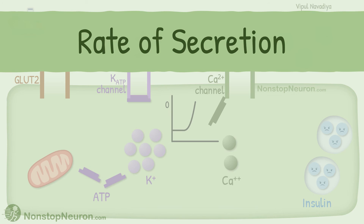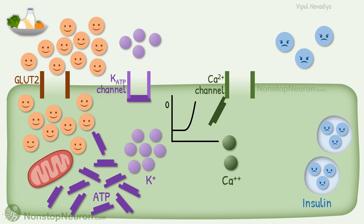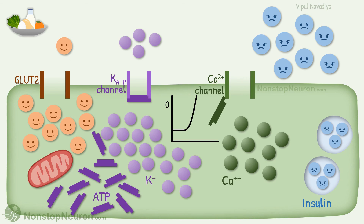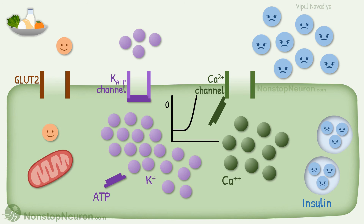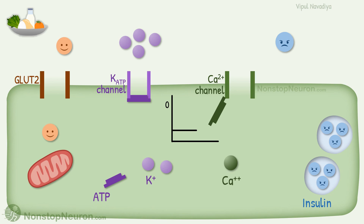Now let's talk about the rate of insulin secretion. Release of insulin is not an all-or-none phenomenon. The rate of release depends on blood glucose level. The more the blood glucose, the more intense the entire process and ultimately the more insulin is released. On the other hand, if blood glucose is low, the process is less intense and less insulin is released.